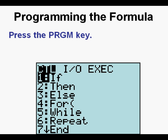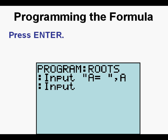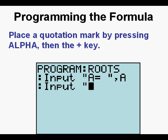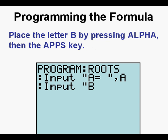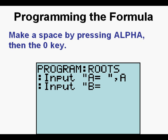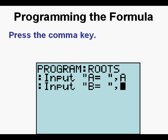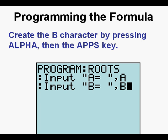Press the Comma key, just above the 7 key. Make an A by pressing the Alpha key, then the Math key. Go to the next line of code by pressing Enter. Press the Program key, then arrow once to the right for the input/output menu. Press Enter twice. Place a quotation mark by pressing Alpha, then the Plus key. Place the letter B by pressing Alpha, then the Apps key, just to the right of the Math key. Go to the Test menu by pressing Second, then Math. Press Enter. Make a space by pressing Alpha, then the Zero key. Make the right quotation mark by pressing Alpha, then the Plus key. Make the letter C by pressing Alpha, then the Program key. Press the Comma key. Create the B character by pressing Alpha, then the Apps key.